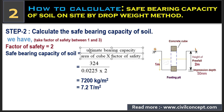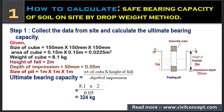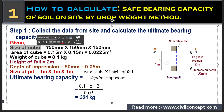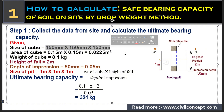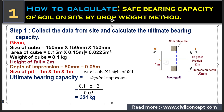First, we need to calculate the ultimate bearing capacity of the soil. The size of the cube given is 150 mm × 150 mm × 150 mm. The base area of the cube is 0.15 m × 0.15 m, which gives us 0.0225 m².